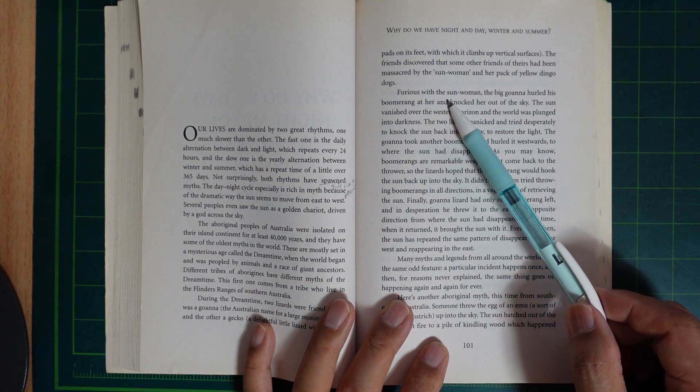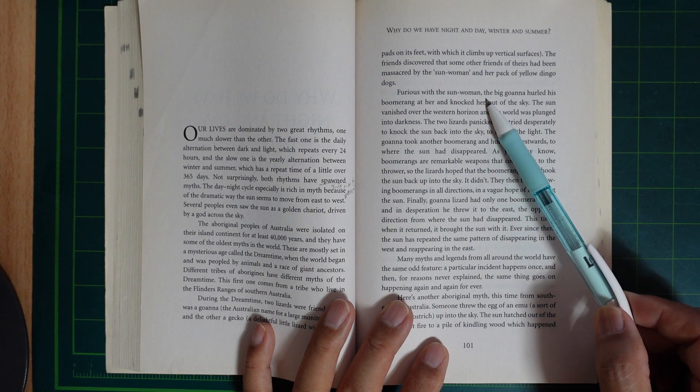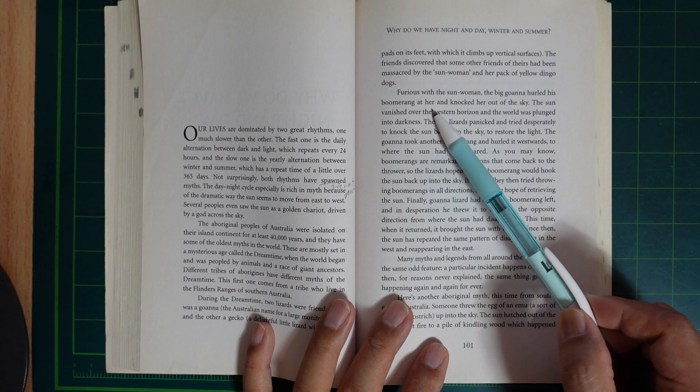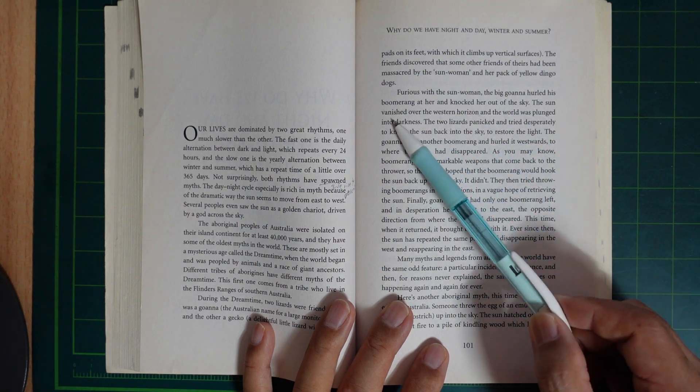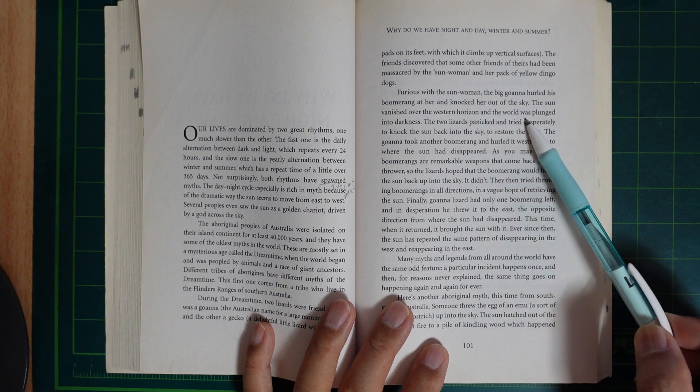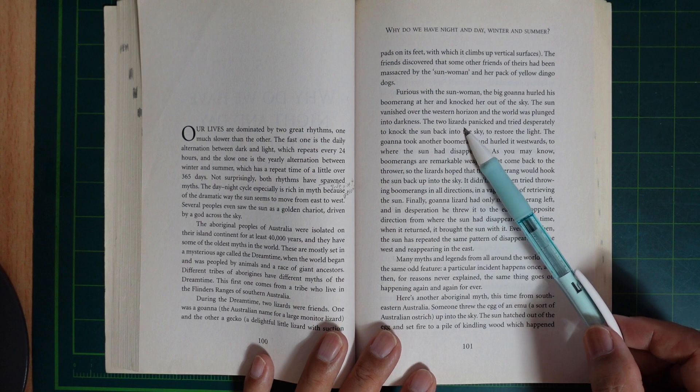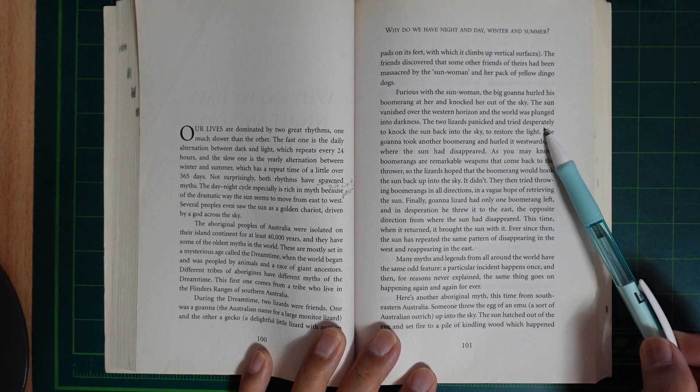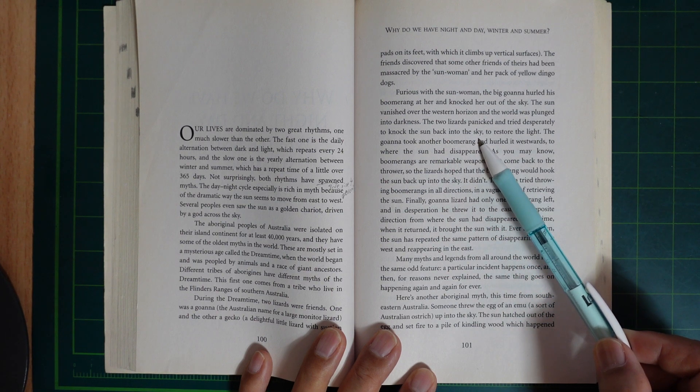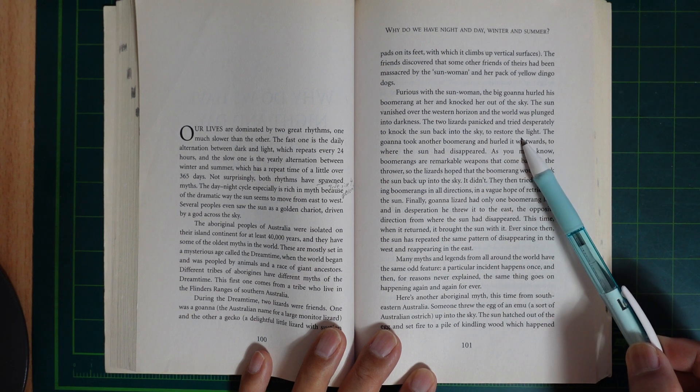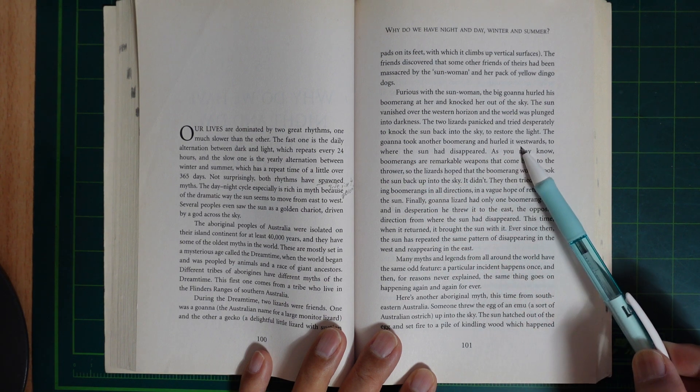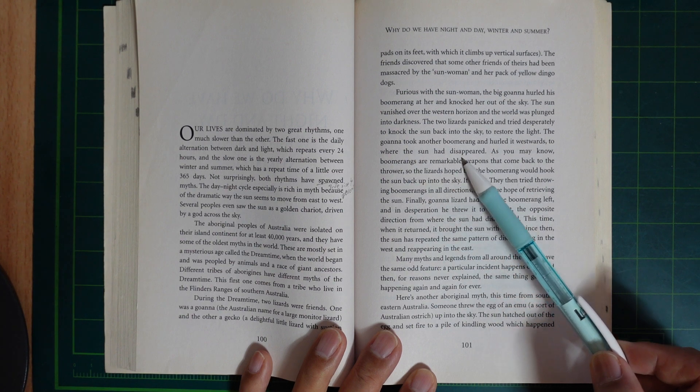Furious with the sun woman, the big goanna hurled his boomerang at her and knocked her out of the sky. The sun vanished over the western horizon and the world was plunged into darkness. The two lizards panicked and tried desperately to get the sun back into the sky to restore the light.